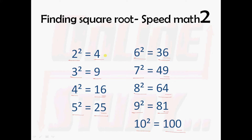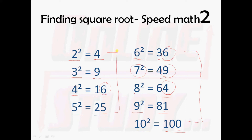One important point to be noted: 2 square equal to 4 and 8 square equal to 64 — again 4 is units digit. 3 square equal to 9 and 7 square equal to 49 — again 9 is units digit. 4 square equal to 16 and 6 square equal to 36 — again 6 is units digit. You need to remember only these last digits, because we are going to apply techniques based on units digit only.